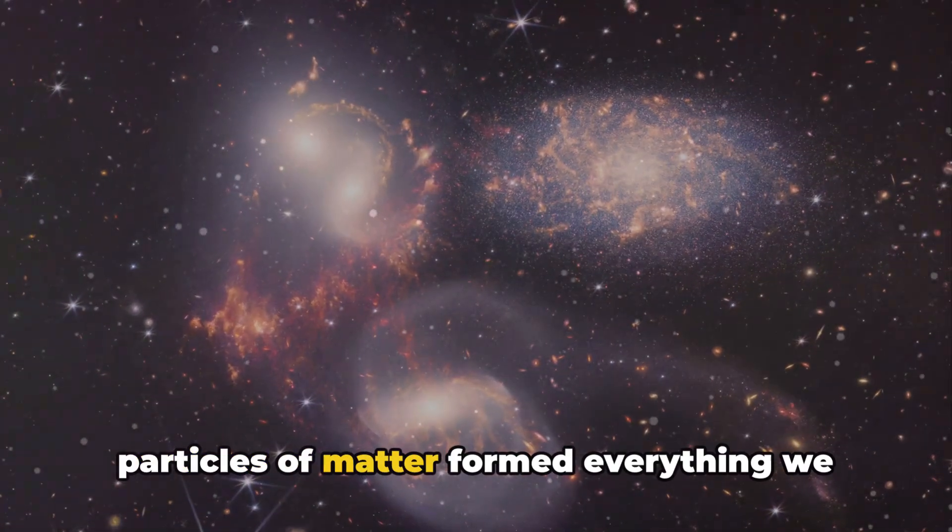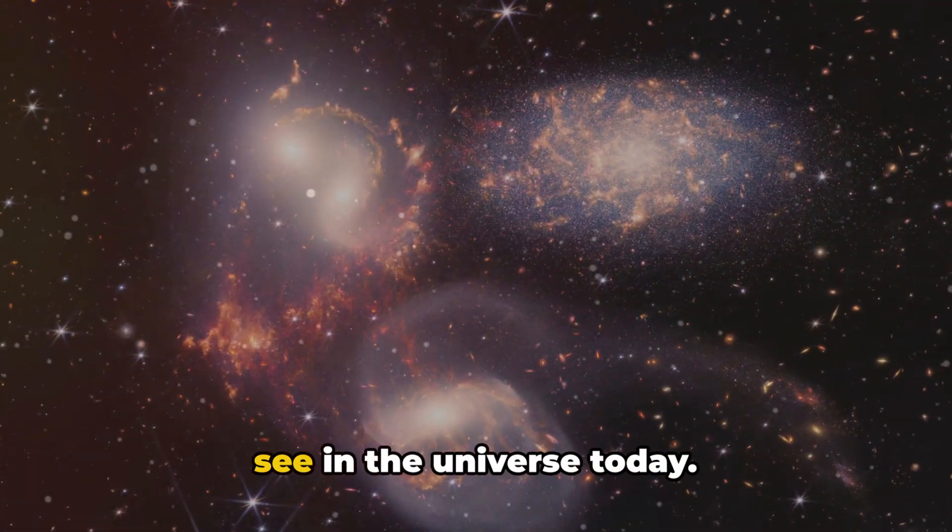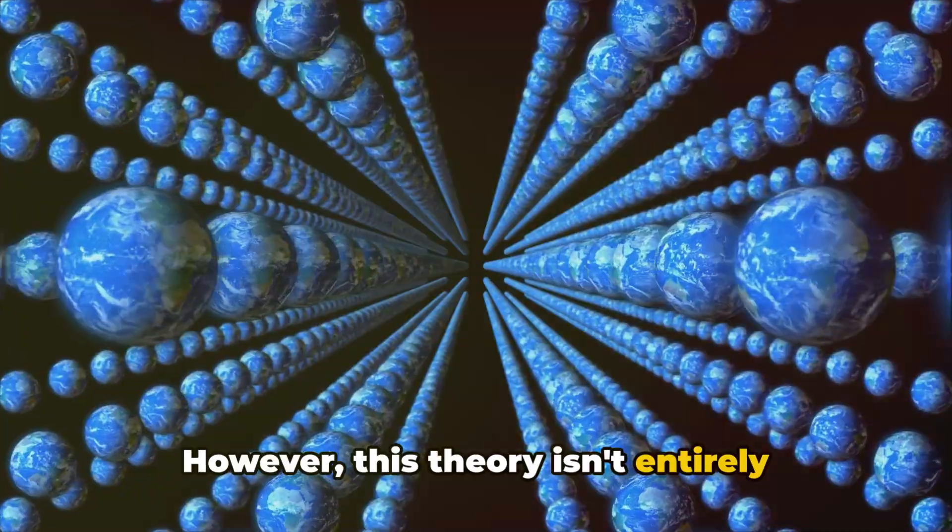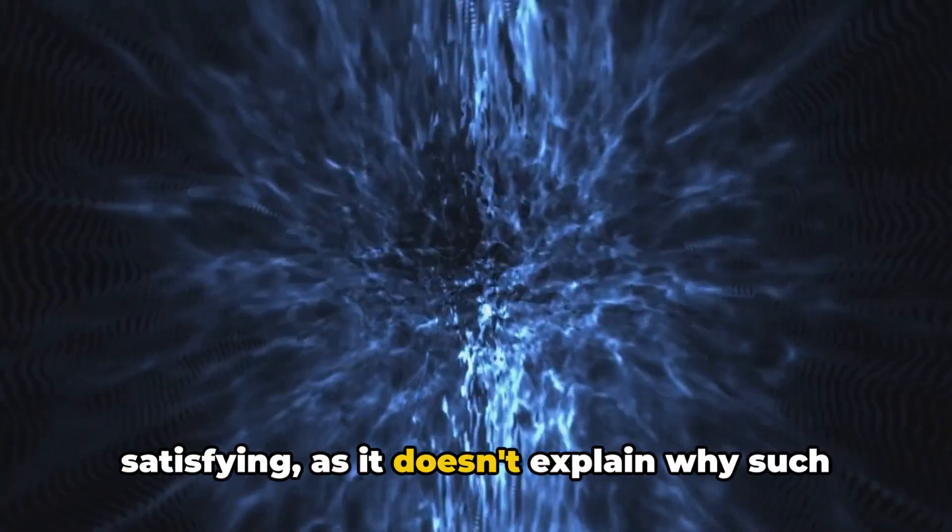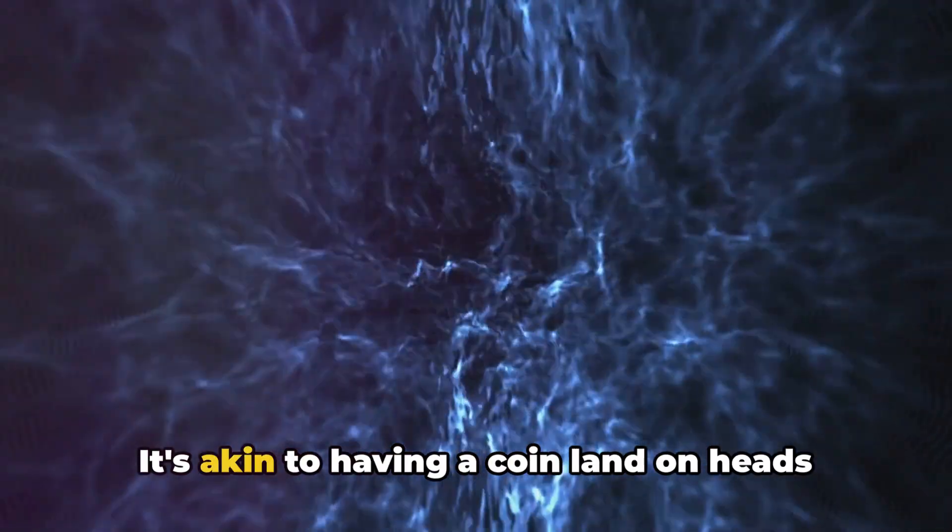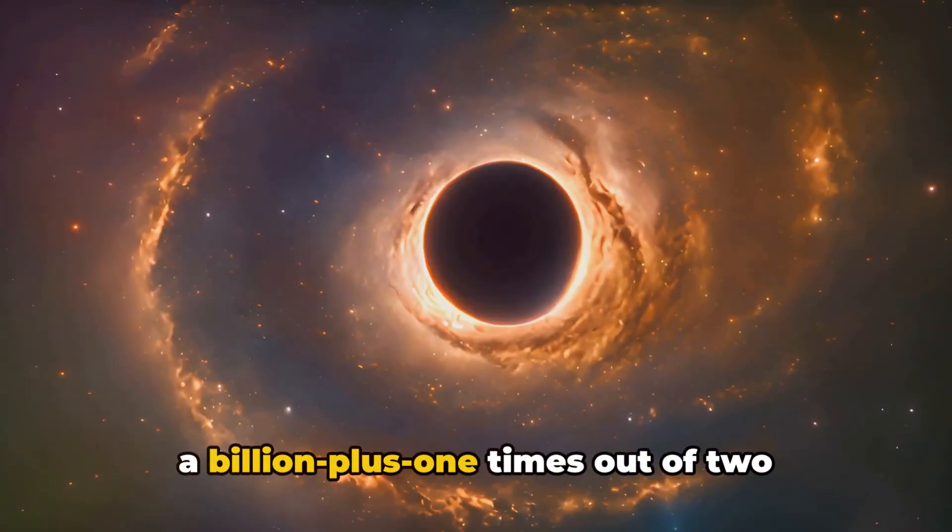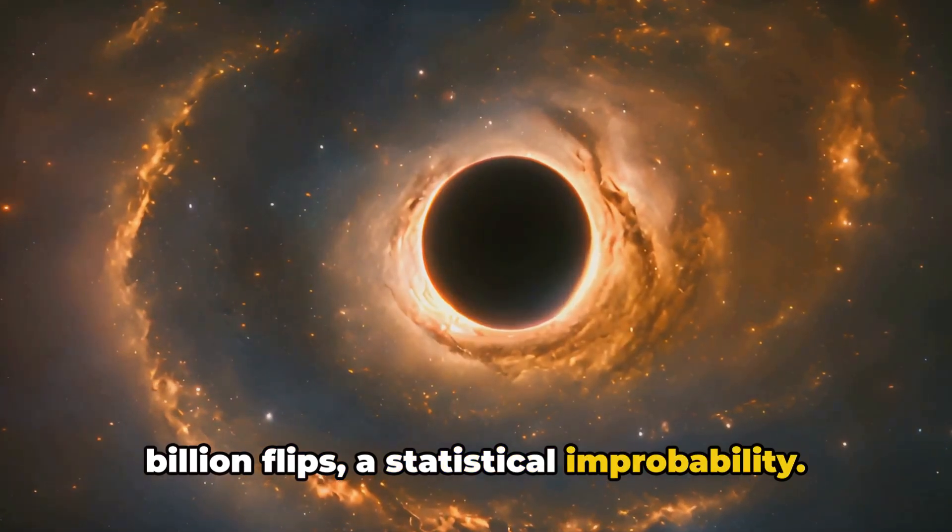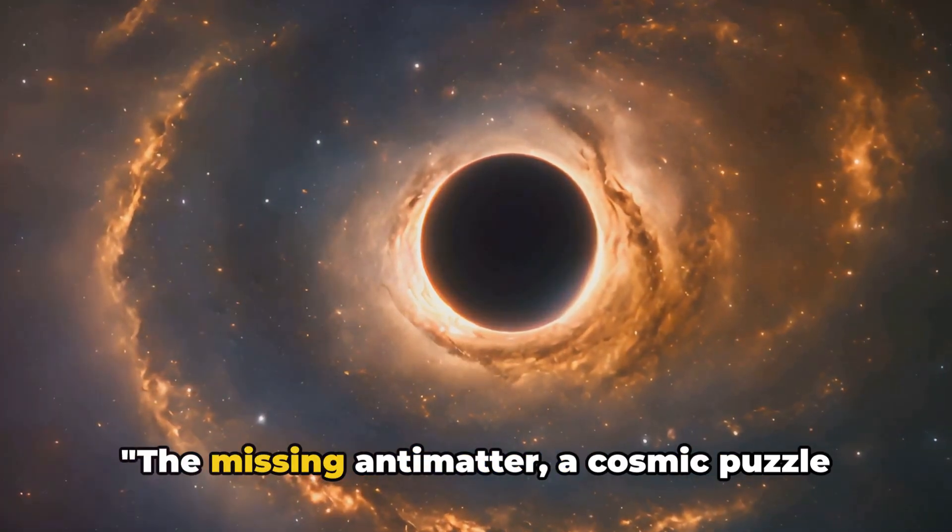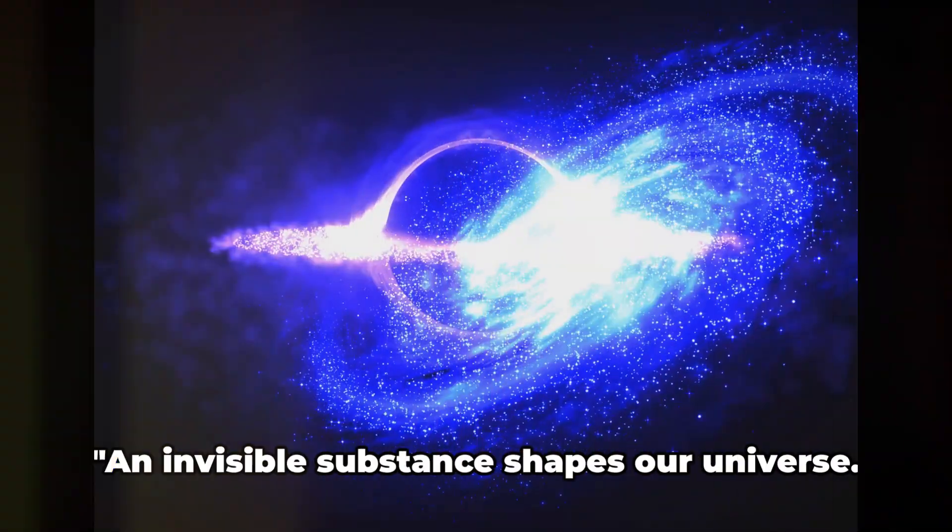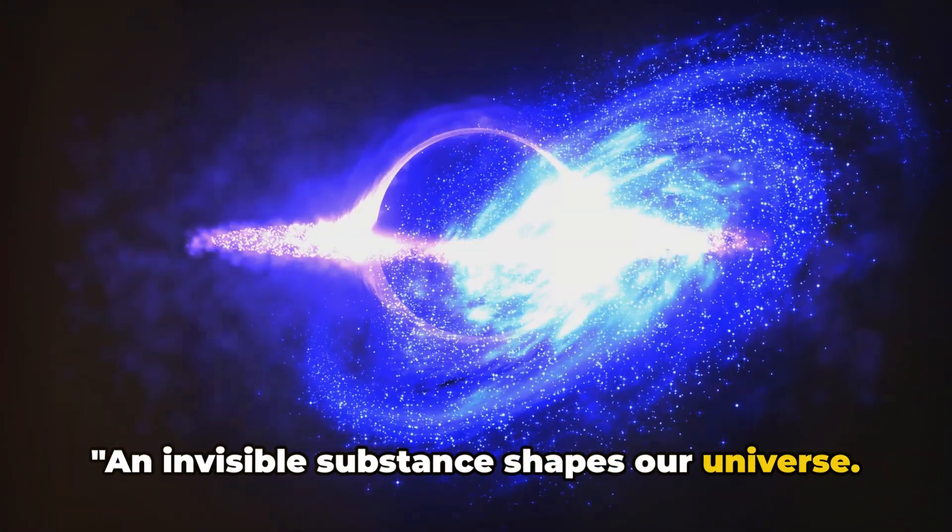Over billions of years, these surviving particles of matter formed everything we see in the universe today. However, this theory isn't entirely satisfying, as it doesn't explain why such an imbalance would occur in the first place. It's akin to having a coin land on heads a billion plus one times out of two billion flips, a statistical improbability. The missing antimatter, a cosmic puzzle that keeps scientists awake at night.